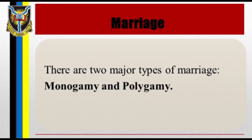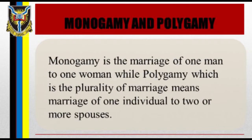Essentially there are two major types of marriage: monogamy and polygamy. Monogamy is the marriage of one man to one woman; it is statistically the most prevailing form in many societies, including polygamous societies (Okay, 1984). Polygamy means the plurality of marriage — the marriage of one individual to two or more spouses.